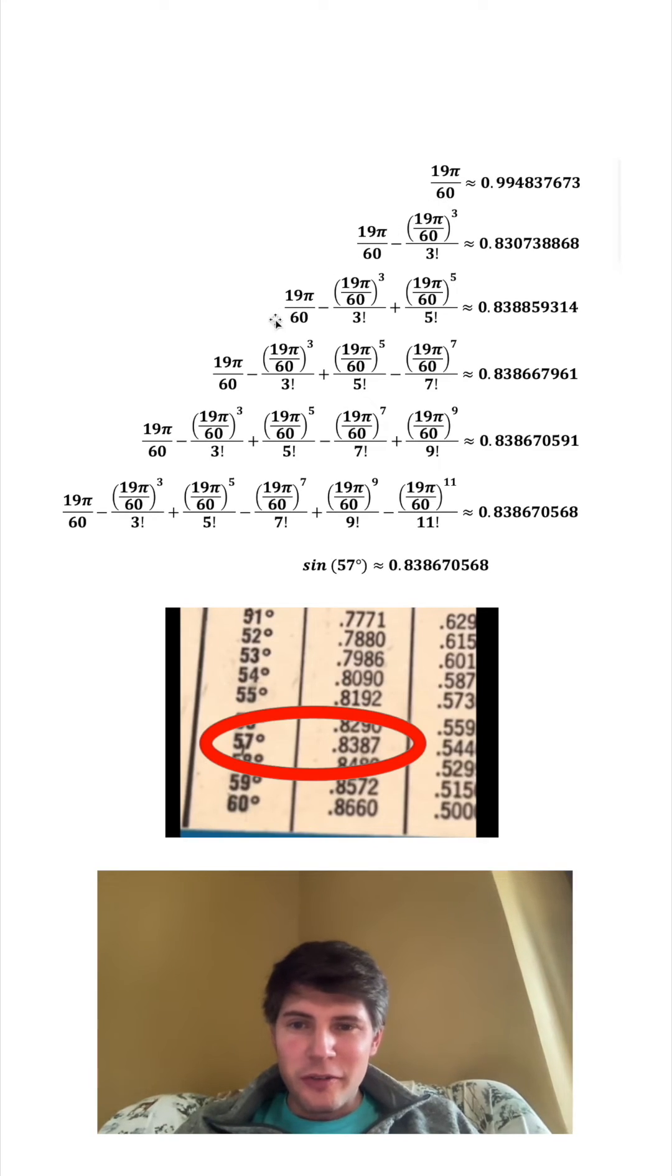So here's all the work for the first six terms of the Taylor polynomial rounded to nine decimal points. And here's the actual value of sine 57 rounded to nine decimal points.